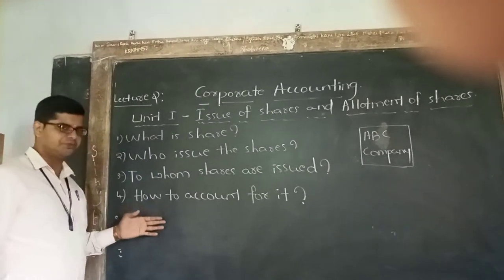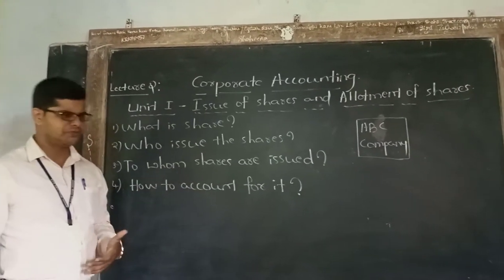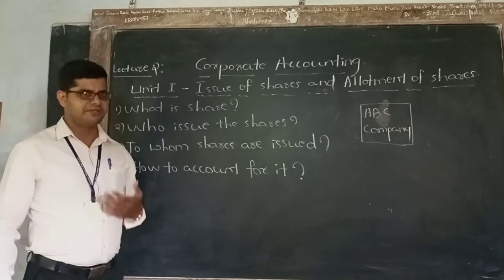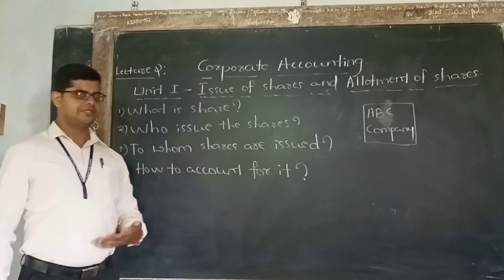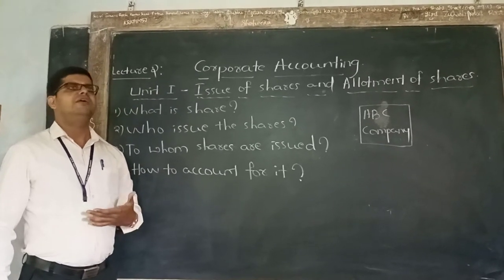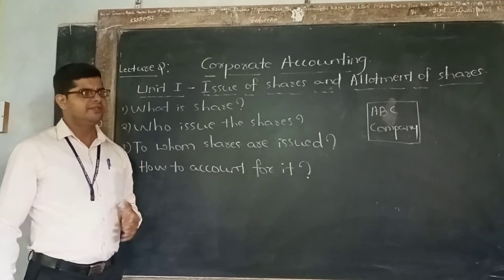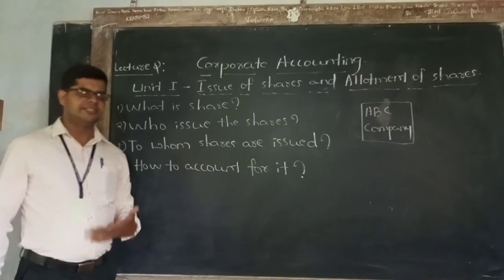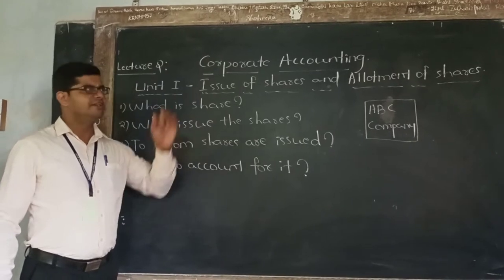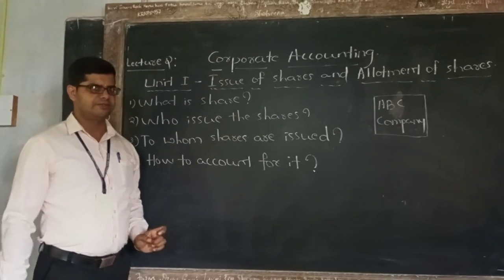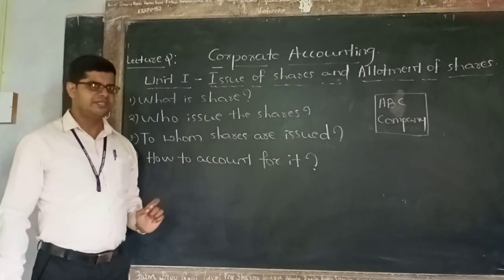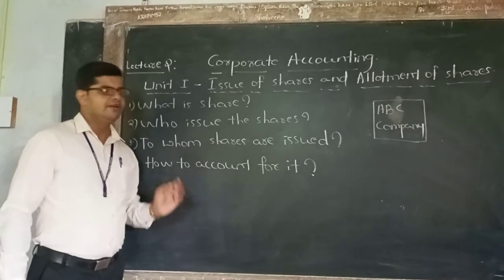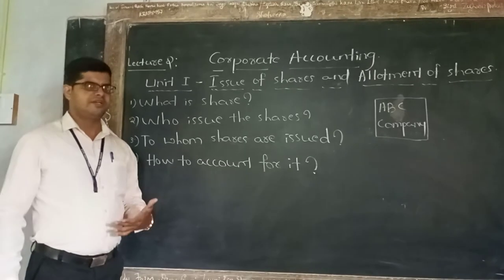Lastly, we answer the question of how to account for it. We know accounting came into the picture because of the money measurement concept — whenever transactions take place in companies in terms of money or money's worth. We follow the accounting cycle: business transactions to journal, journal to ledger, ledger to trial balance, trial balance to final accounts.